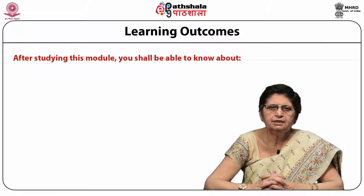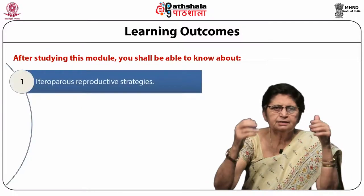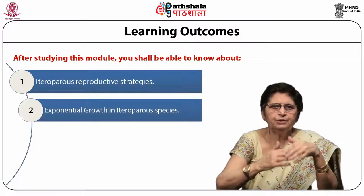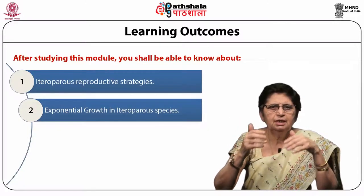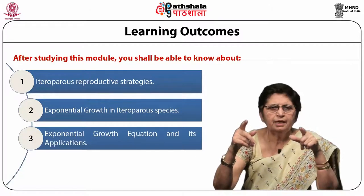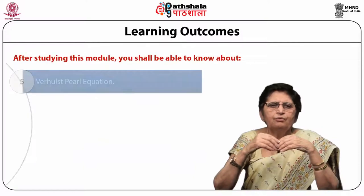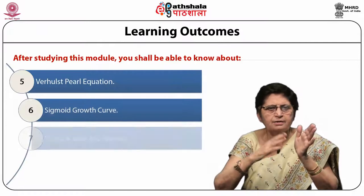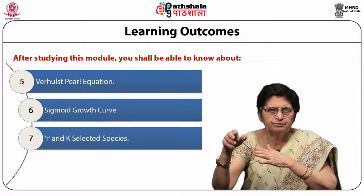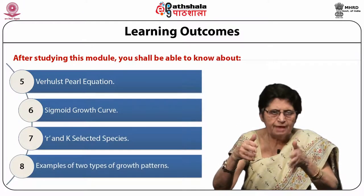After studying this module, you shall be able to know about the iteroparous reproductive strategies, the exponential growth in iteroparous species, the exponential growth equation and its application, logistic growth, the Verhulst-Pearl equation, sigmoid growth curve, and R and K selected species, and examples of the two growth patterns.